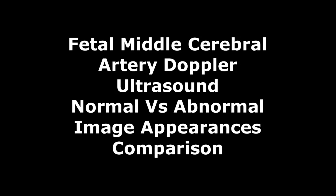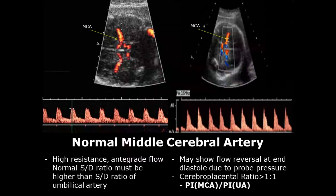Hello everyone, this is Dr. Sam. Today we will study Doppler ultrasound of the fetal middle cerebral artery. On spectral Doppler there is high-resistance antegrade flow — antegrade meaning forward flow. We can see the high-resistance flow by looking at the velocity; the end-diastolic velocity is very low, less than 10 centimeters per second.